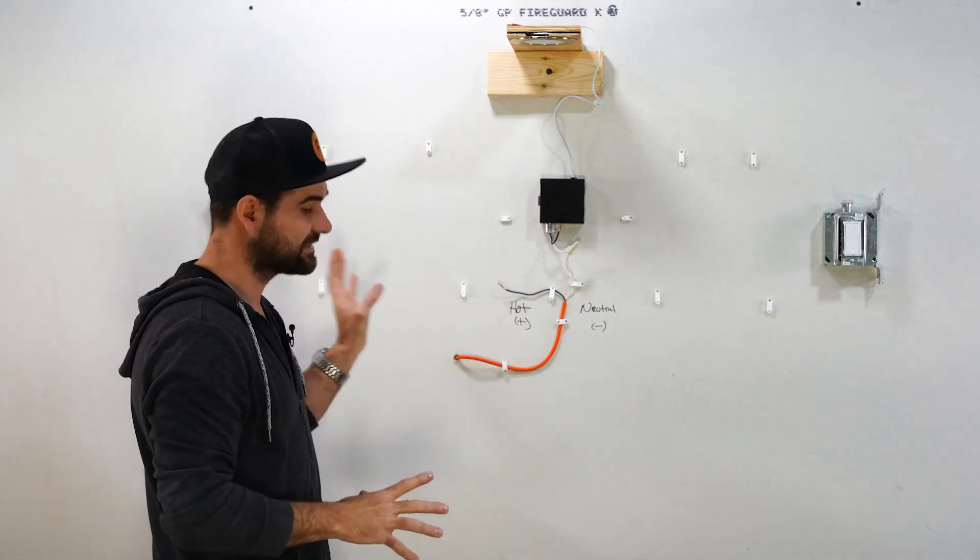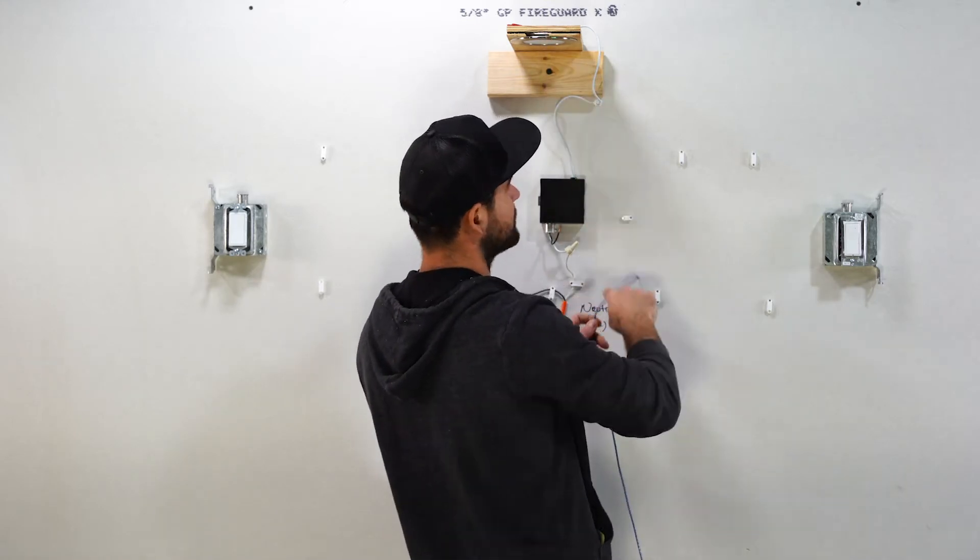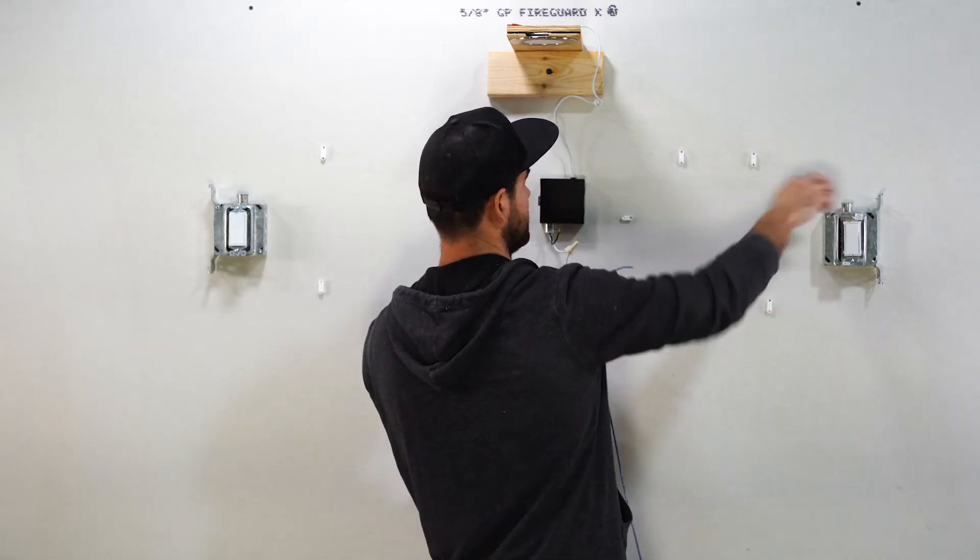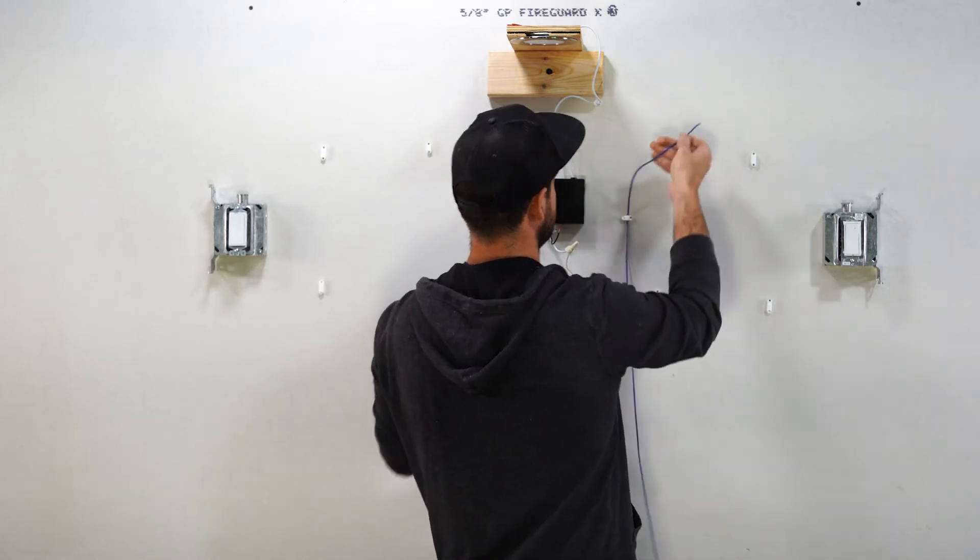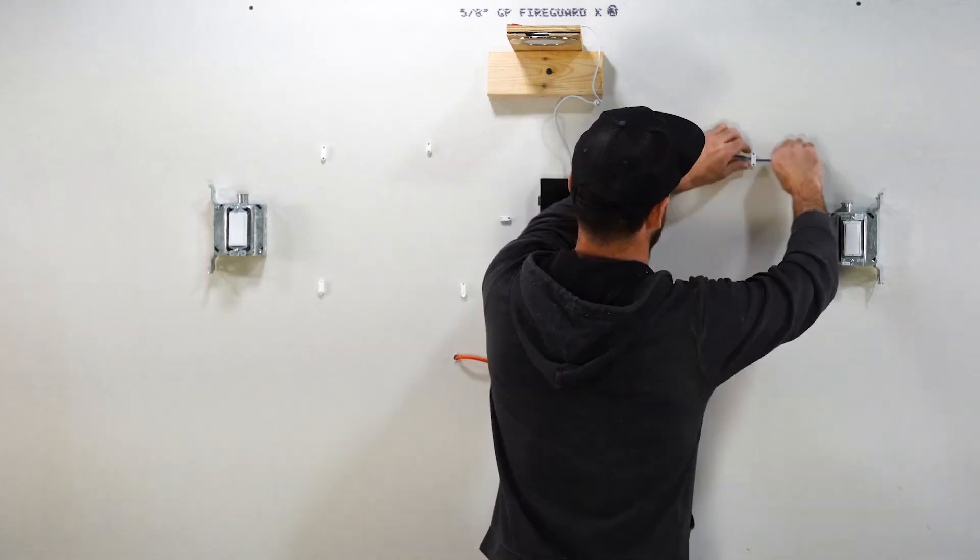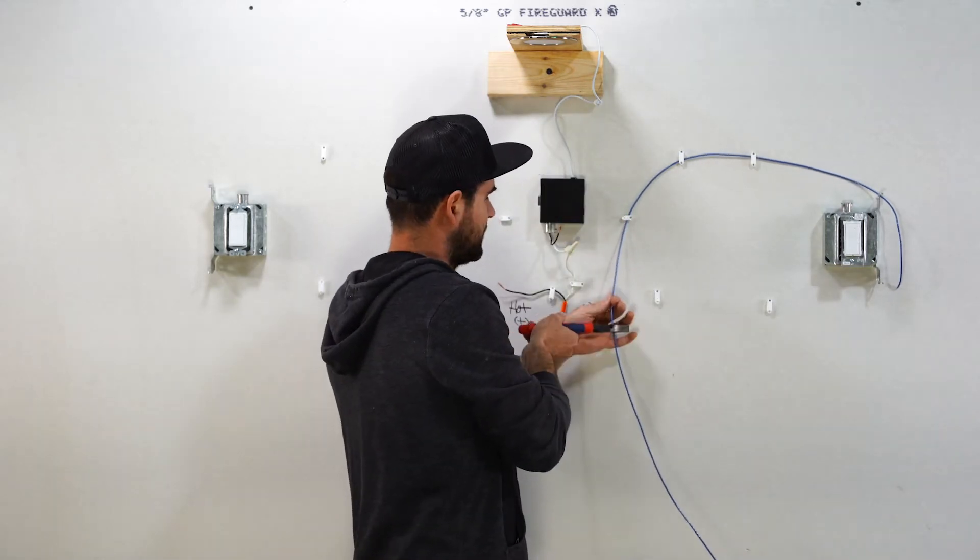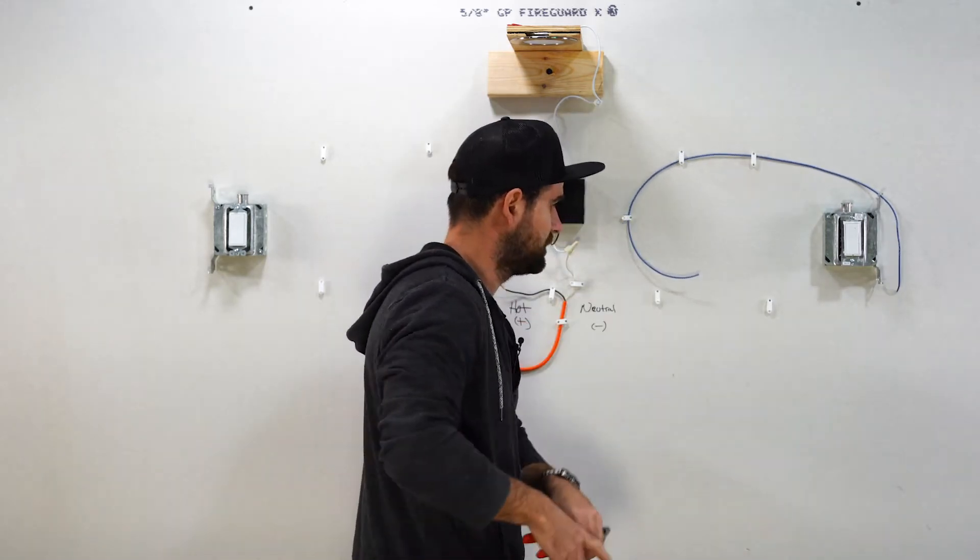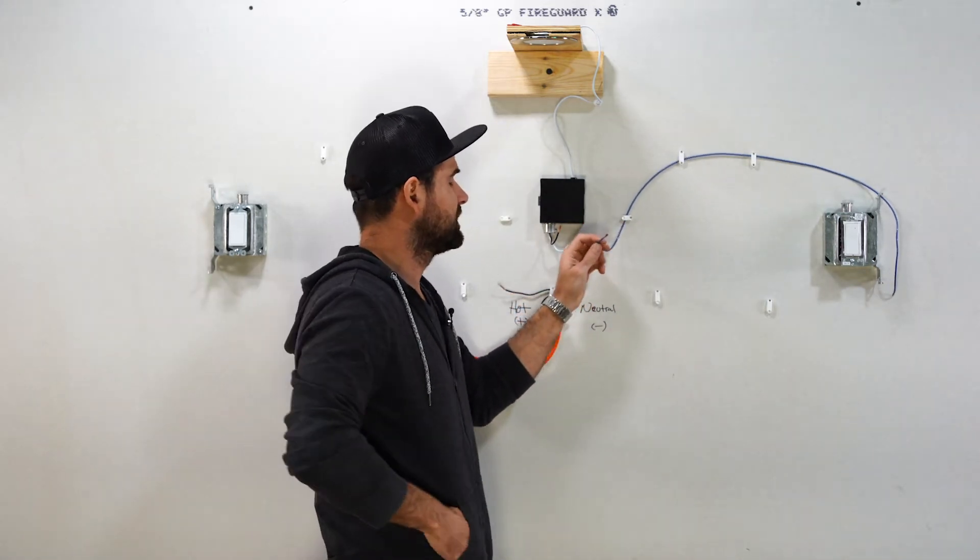So now the next thing that we're going to do, we're going to run a wire from our light switch over to one of our switches over here. So we're going to take this blue wire and I'm going to lace it through here so you guys can see what I'm doing and we're going to run that right over to there. Take my wire cutters, cut this wire and then strip this back.